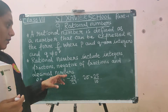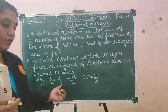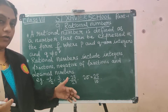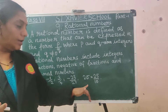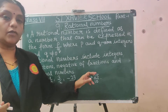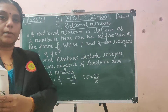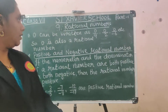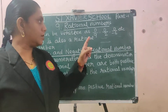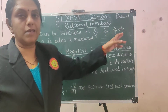Some fraction examples: minus 1 by 2 is a negative rational number; 3 by 4 is a positive fraction; minus 23 by 7 is a negative fraction. The decimal 2.5 can be written as 25 by 10, so it is also a rational number. Also, 0 can be written as 0 by 9, 0 by 2, 0 by minus 6, etc.